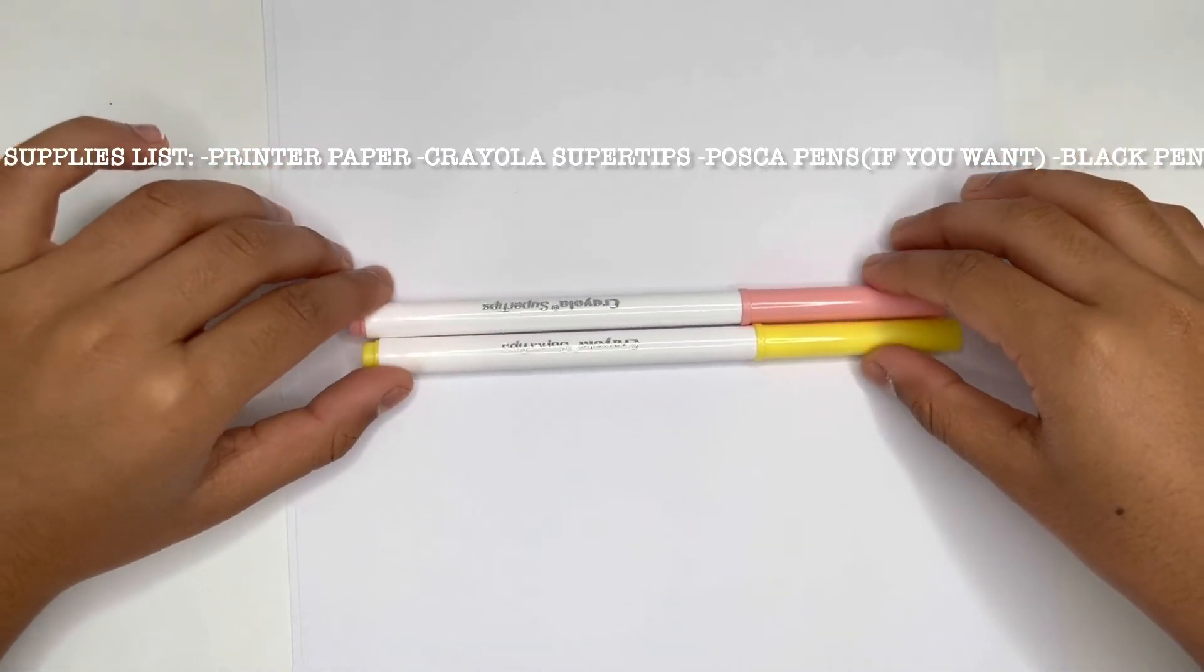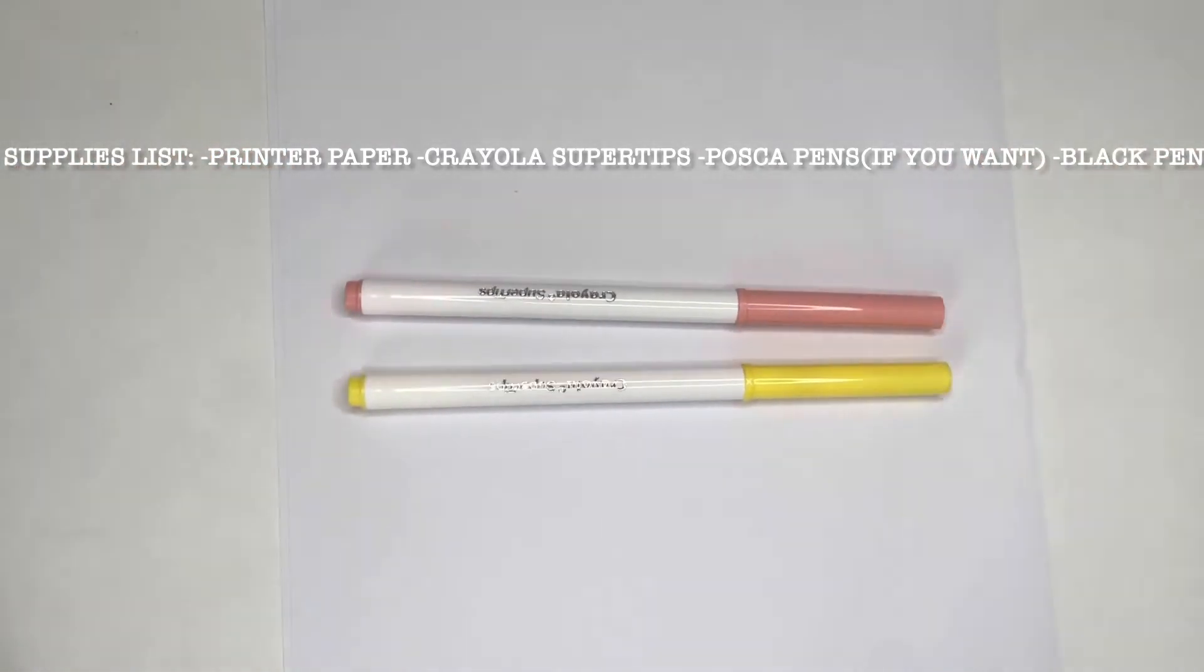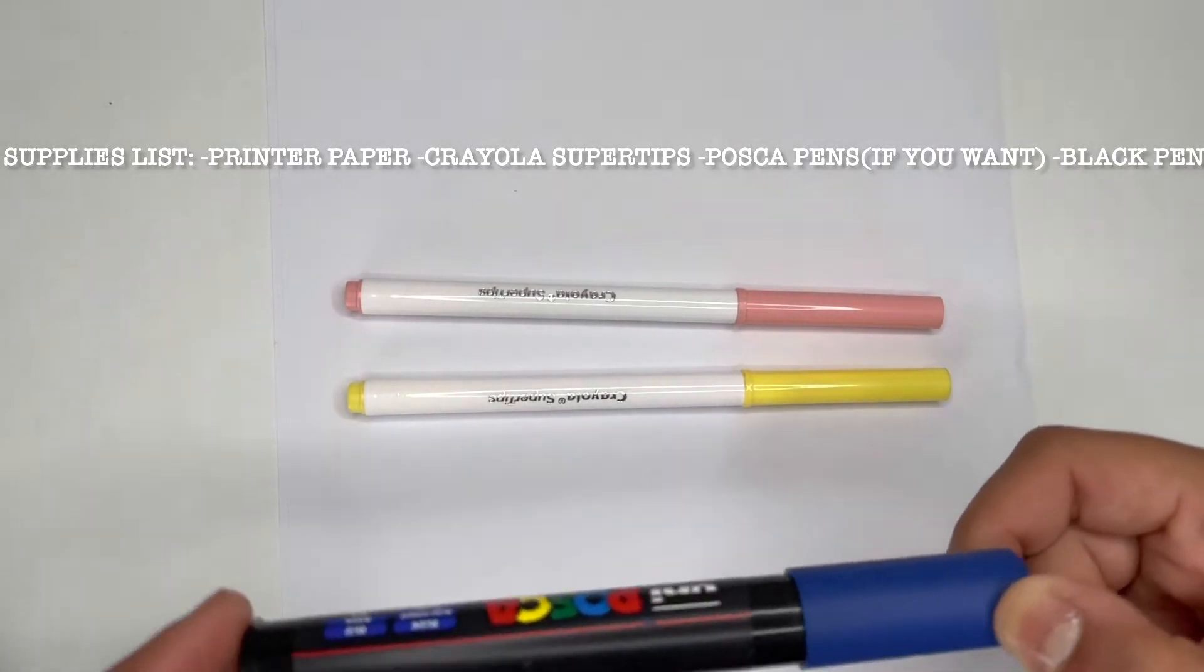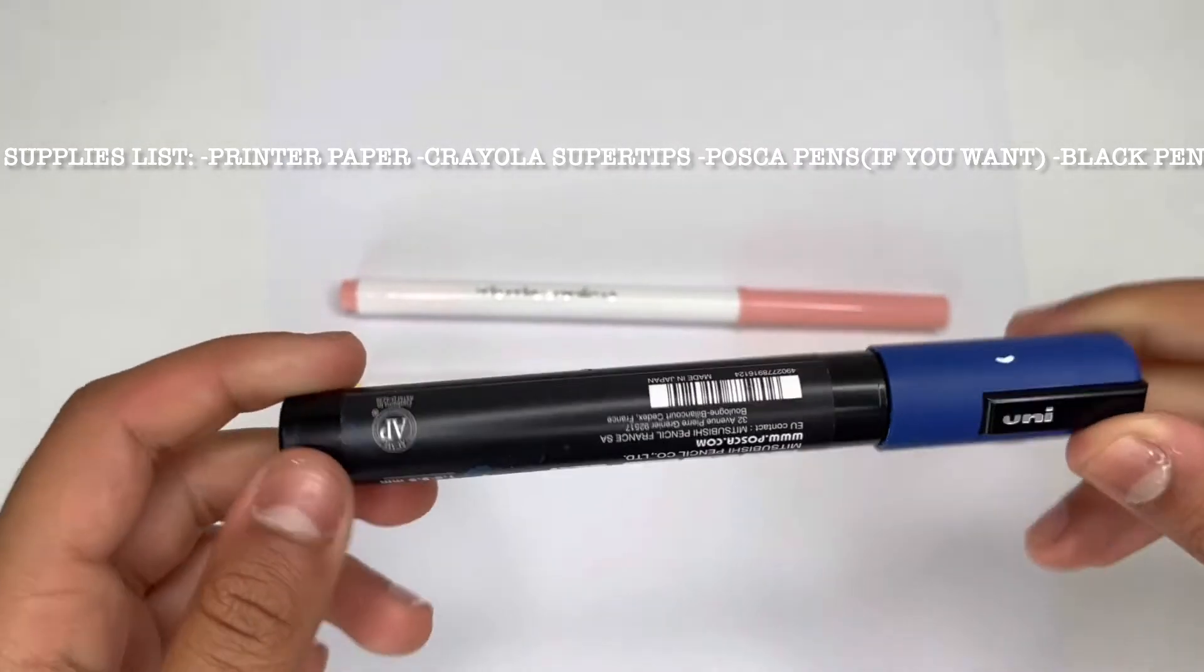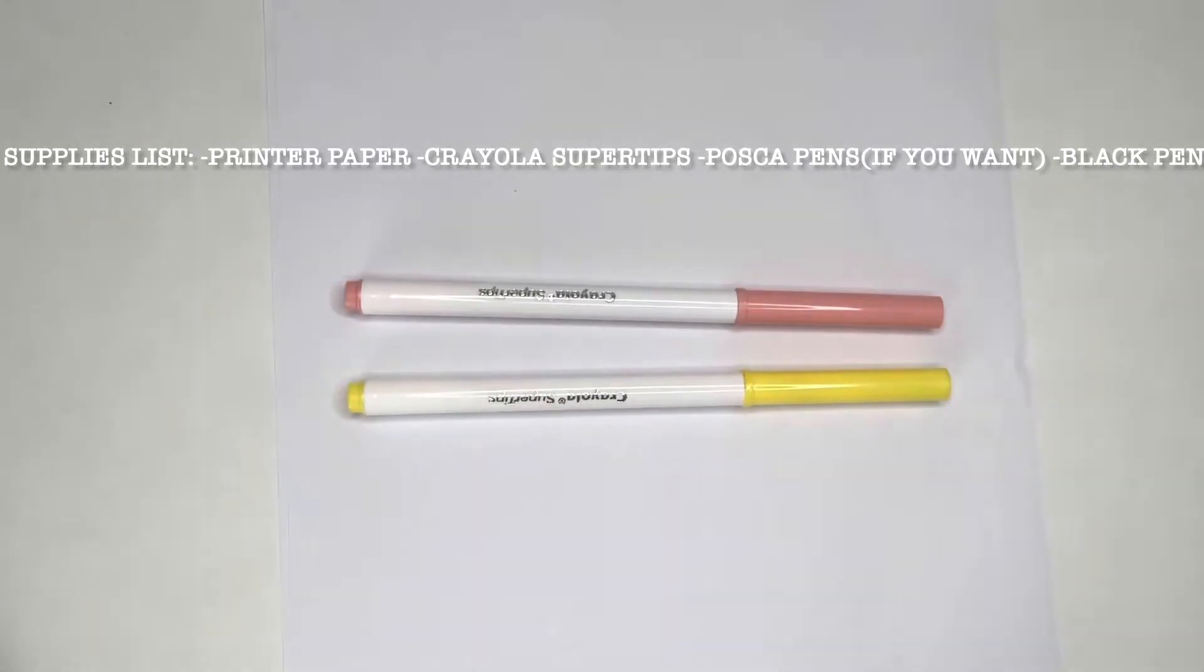Once you do that, you also need some type of black marker. If that is your Crayola markers you can use that. It doesn't have to be black but I think black will look nice. Also if you have any of these Posca pens, I know these are not affordable but if you have any you can use them too to go over it. I do have one in black but today I'm going to distance from that.